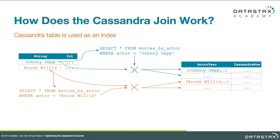How does this work inside the Spark Cassandra connector? It implements the classical index-based join algorithm, which we can see played out in this diagram. The source RDD on the left includes Johnny Depp and Bruce Willis. The connector iterates through the items in that RDD, and for each one that participates in the join condition, it creates a new CQL query on the table being joined to — a select star from movies by actor where actor equals Bruce Willis, and another where actor equals Johnny Depp — and we'll get some arbitrary number of columns back depending upon how productive those actors have been. Those results are merged into the result of the join.